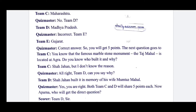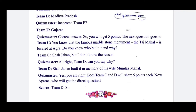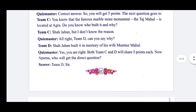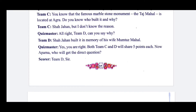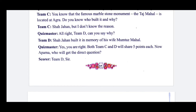The next question goes to Team C. You know that the famous marble stone monument, the Taj Mahal, is located at Agra. Do you know who built it and why? Team C answers: Shah Jahan, but I don't know the reason. Team D answers: Shah Jahan built it in memory of his wife Mumtaz Mahal. Quiz Master: Yes, you were right. Both Team C and D will share 5 points each.